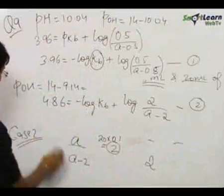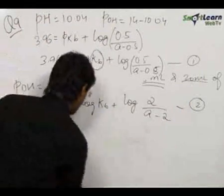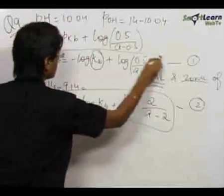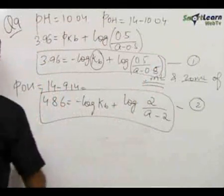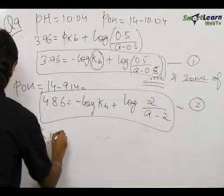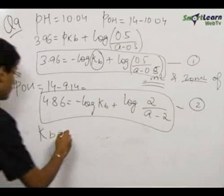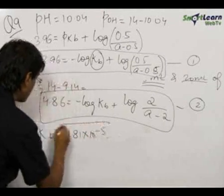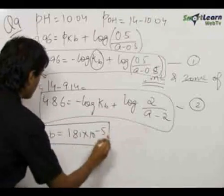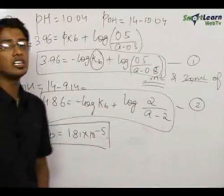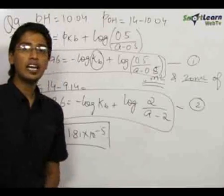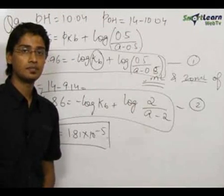This is our second reaction or rather the second equation. On solving this first and this second equation, we get the value of KB as 1.81 into 10 power minus 5 and hence our final answer for the dissociation constant for the weak base is 1.81 into 10 power minus 5. Thank you.